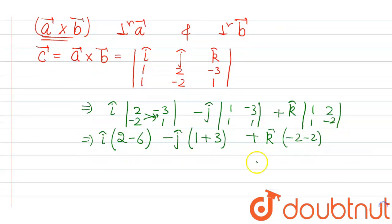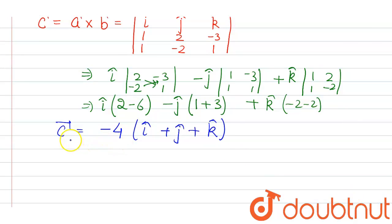So that means the c vector comes out to be minus 4 i cap plus j cap plus k cap. And now this c vector is a vector perpendicular to both a and b.